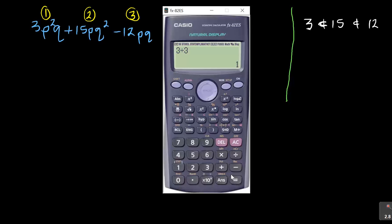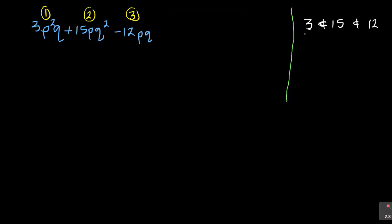So the number to take out is 3, because 3 can go into 3, into 15, and into 12. The next thing to look at is the letters P and Q. P appears in all three terms, and Q appears in all three terms — it must appear in all three. When you're factorizing, you're taking out the common factor not only in terms 1 and 2, but it must be common in all three terms.